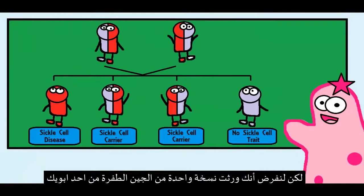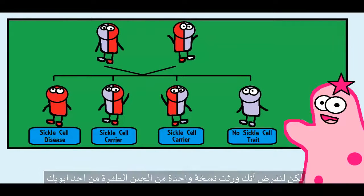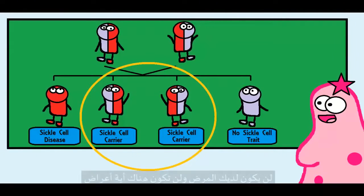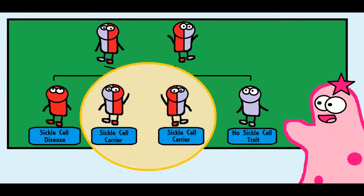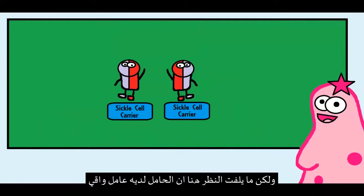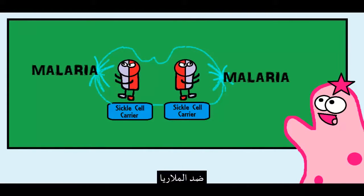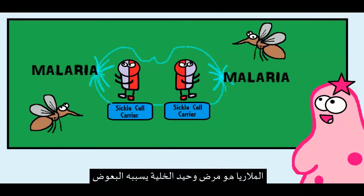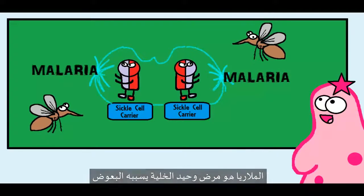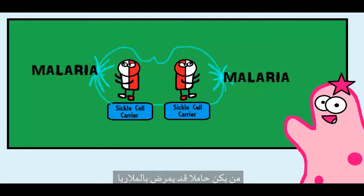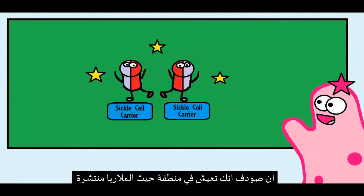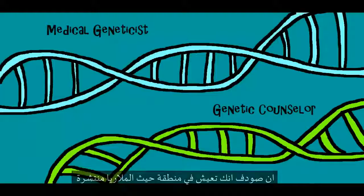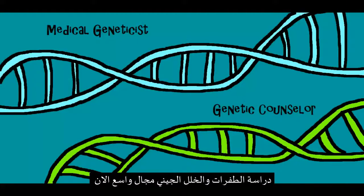But if you just inherit one copy of the mutated gene from one parent, you're going to be considered a carrier, but you don't officially have the disease and usually don't even have symptoms. What's interesting is that carriers appear to have a protective factor against malaria — a disease caused by a protist that can be transmitted by mosquitoes. These individuals can still get malaria, but usually their symptoms are less severe. So in a way, this one copy of a mutation can be an advantage if you live in an area where malaria is really present.